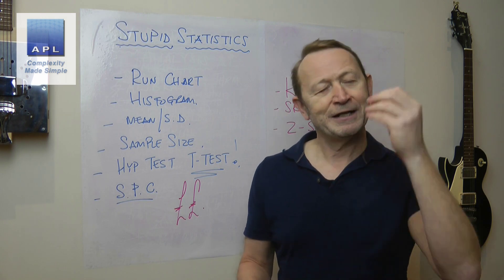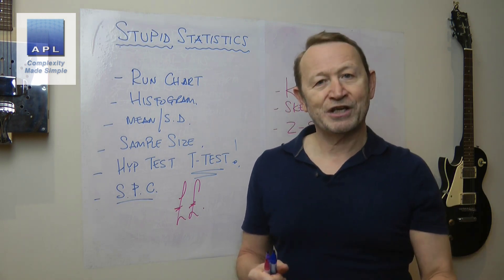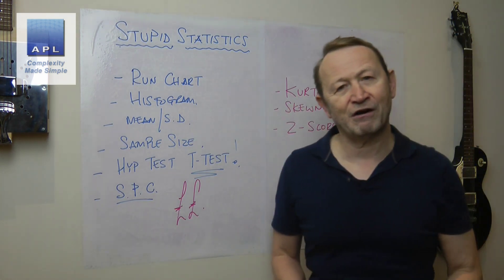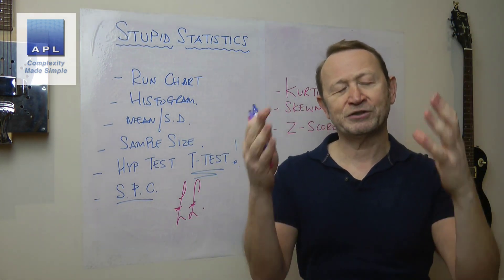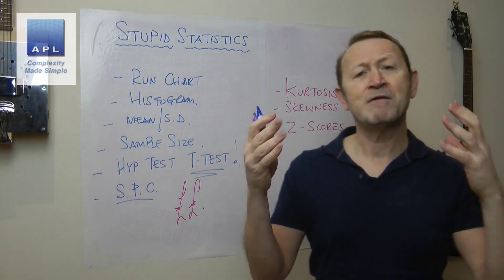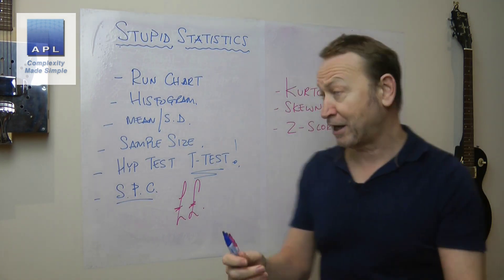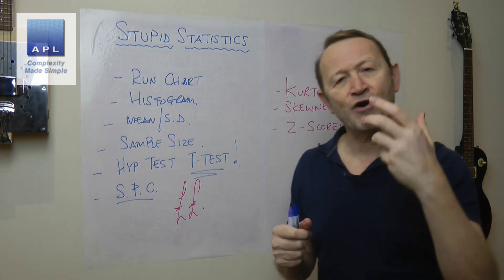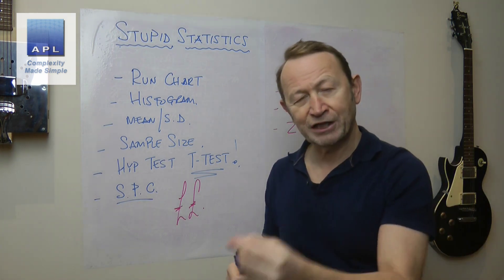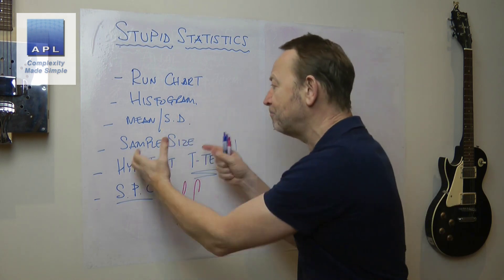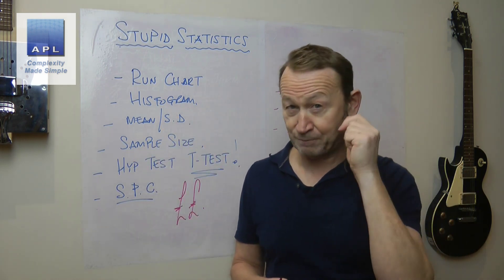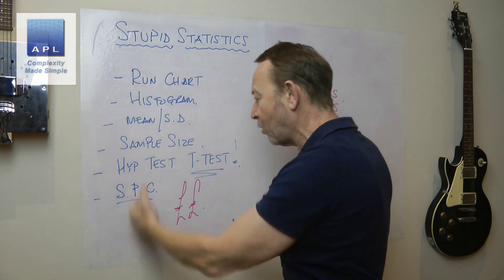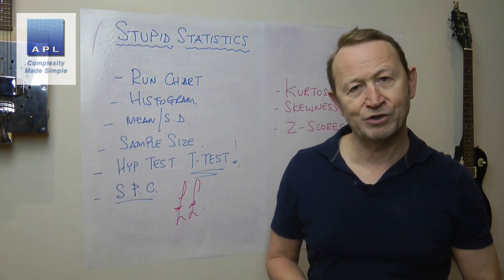Money-making statistics are here, stupid statistics are over here. Please, Black Belts that are out there, Master Black Belts that are out there, please look at all the things you teach, prioritize them, and teach your students the money-making list. Make sure that they prioritize the money-making list and become world-class at using these.